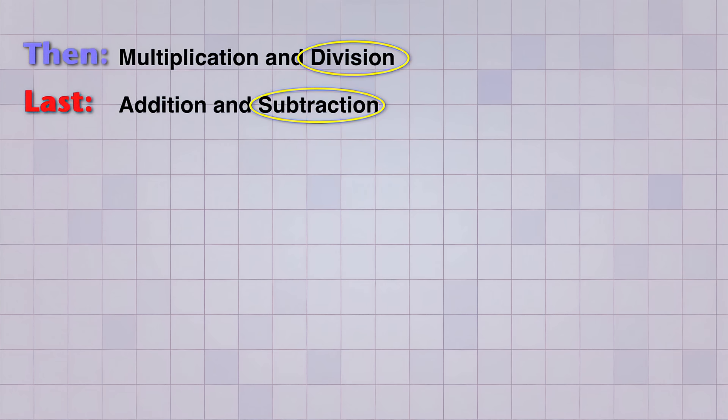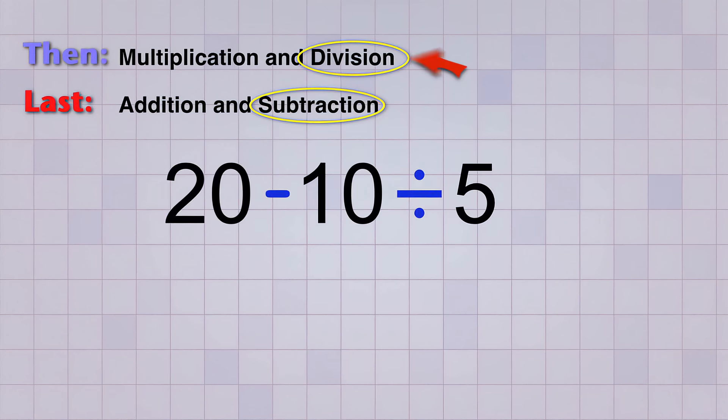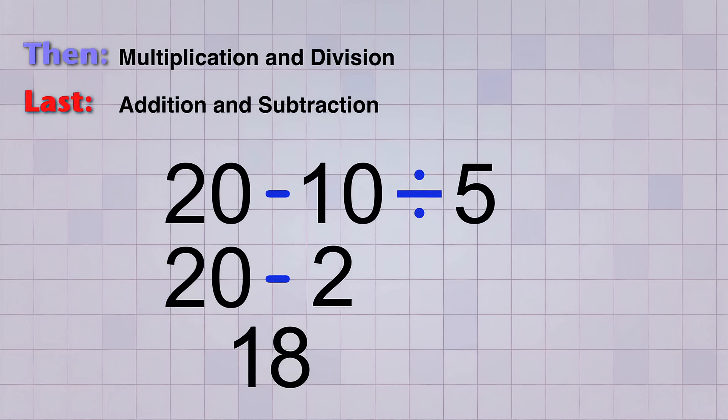Here's one with division and subtraction. 20 minus 10 divided by 5. And since division has a higher priority, we do the 10 divided by 5 first, which equals 2. And then we subtract 2 from 20, and get 18 as our final answer.